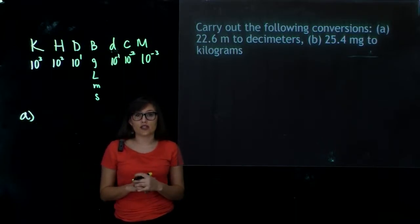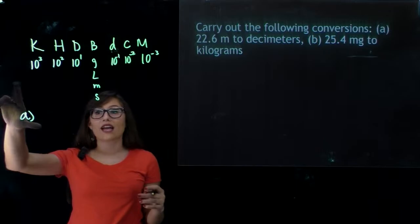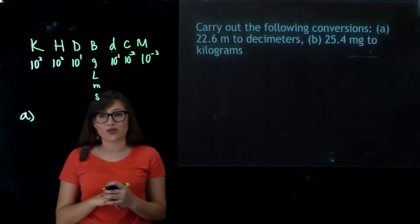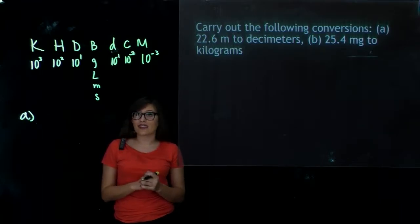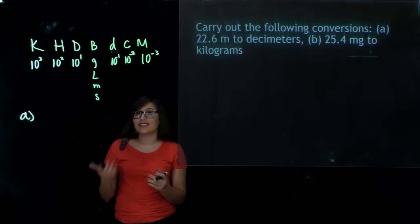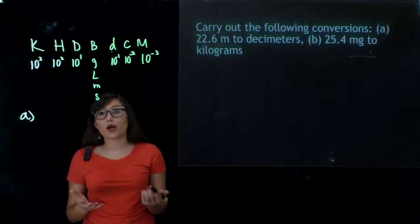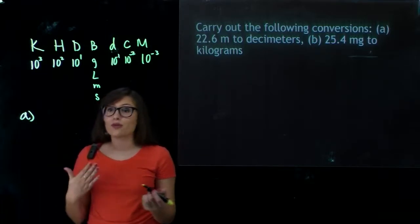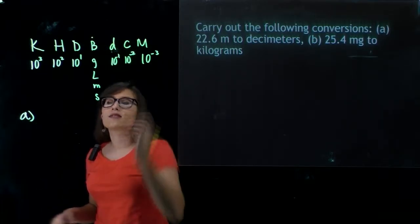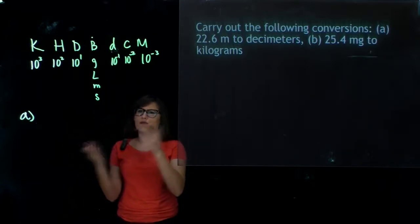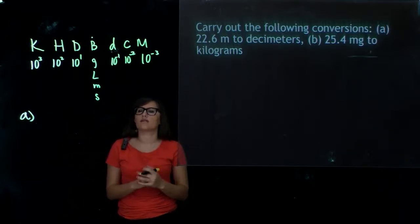There's a nice little tool that we can use: King Henry died by drinking chocolate milk. K stands for kilo, which is 10 to the third. H is hecto, which is 10 to the second. D is deca, which is 10 to the first. B is our base unit — grams, liters, meters, seconds. You can also think about this as where your decimal is placed, and where you're moving the decimal depending on what unit you're converting to.